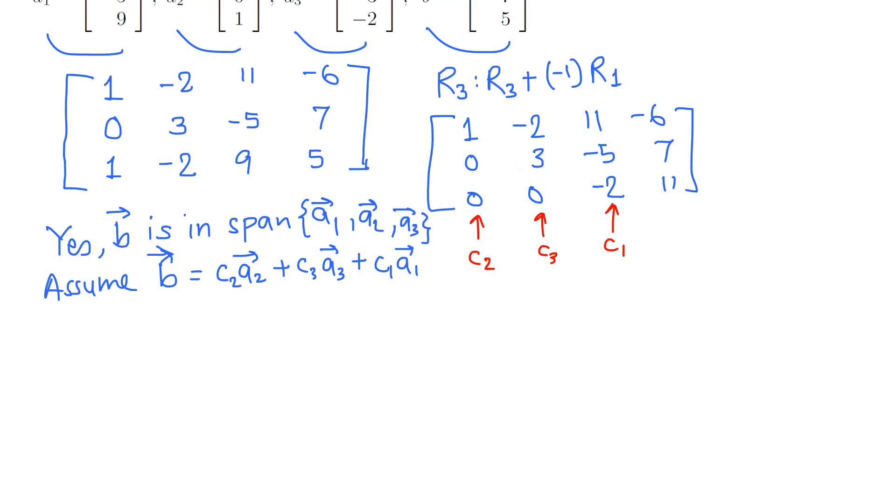Look at the last row. From this what we get: we get -2*c1 = 11, or divided by negative 2, c1 equals -11/2. Now we are working backward.